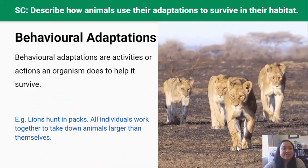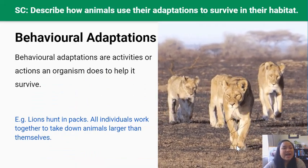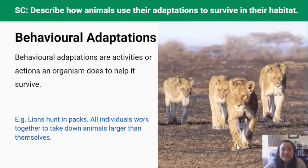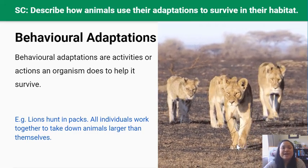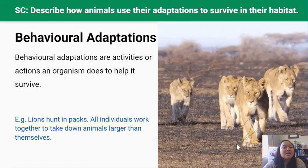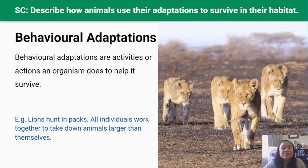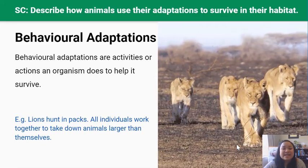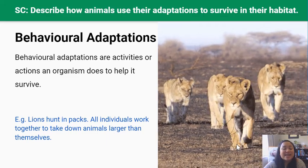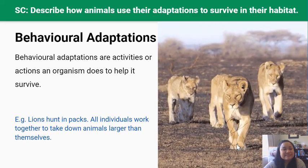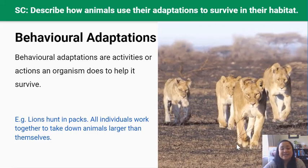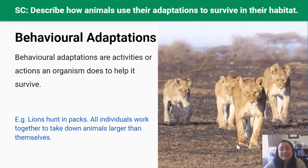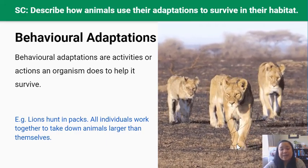Behavioral adaptations are activities or actions an organism does to help it survive. For example, lions hunt in packs or in groups, taking advantage of their numbers to take down animals that are much larger than themselves. They have an organized way of hunting — sometimes they take turns chasing after prey until their prey are exhausted and are easier to capture.